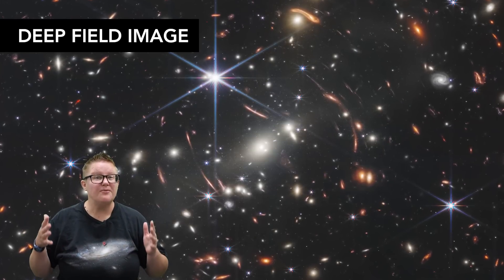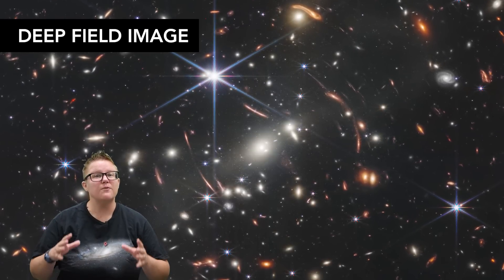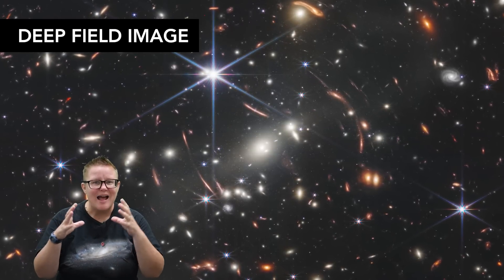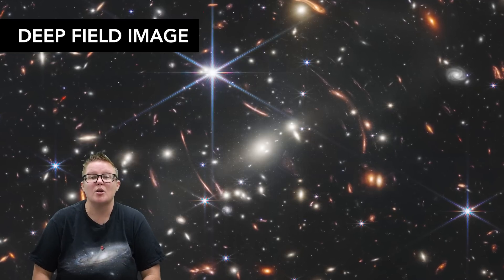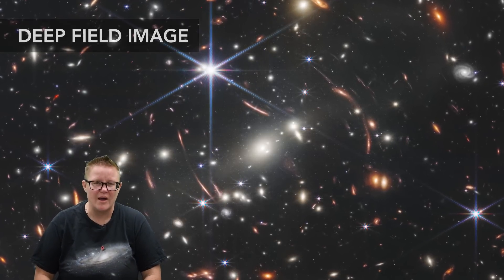So here we have this deep field image. You'll see in the forefront of this image a whole bunch of galaxies all together, and those galaxies are about 4.6 billion light years away.